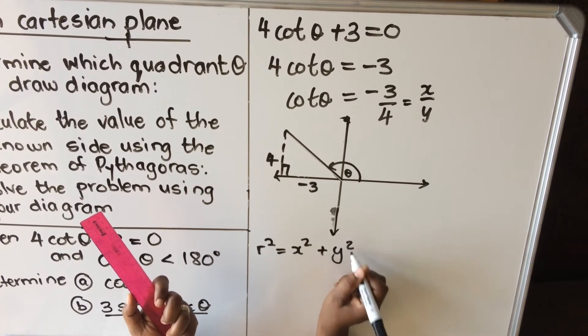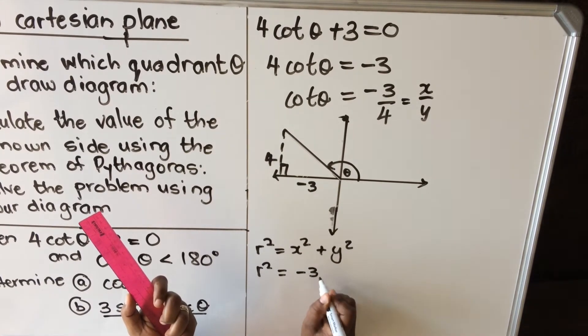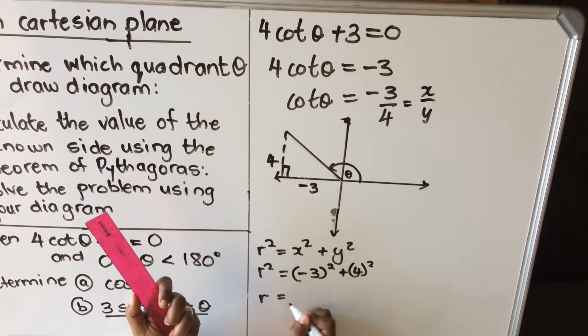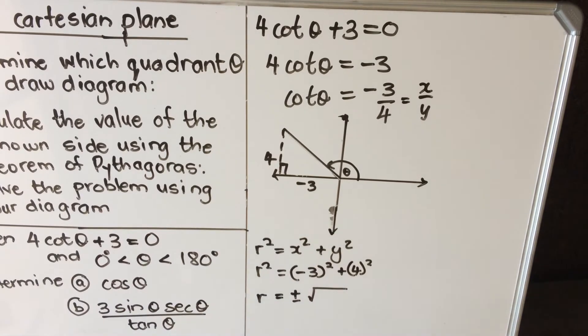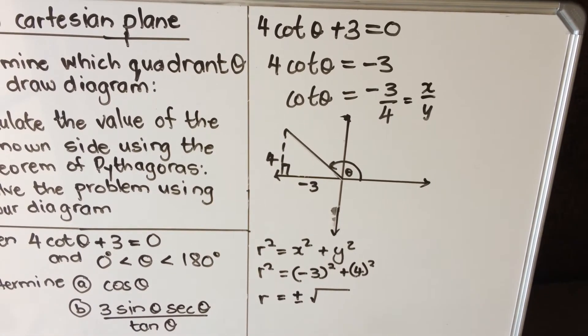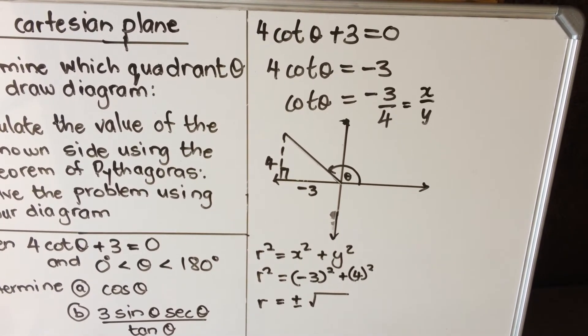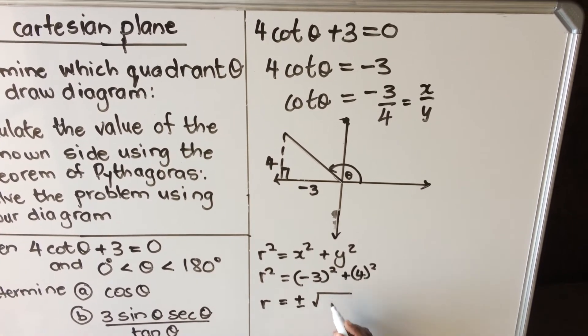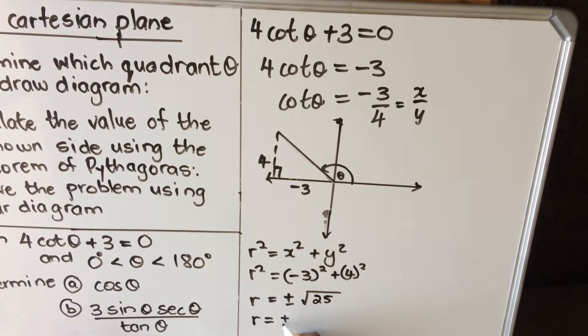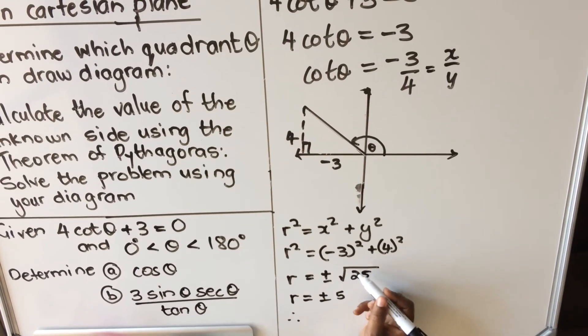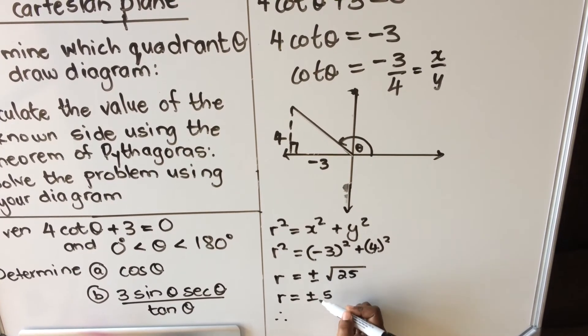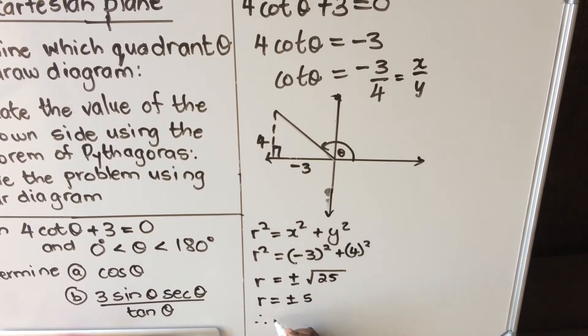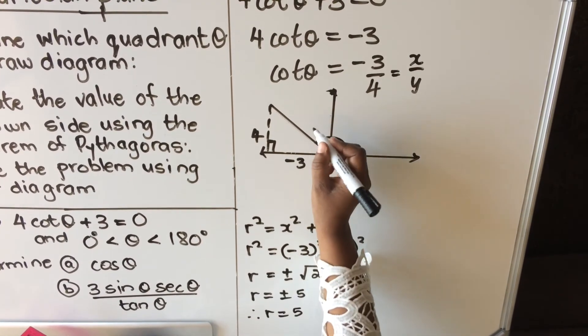This is my theta. My x is minus 3 and my y is 4, so I'm gonna use Pythagoras to calculate my r. So I have r squared equals x squared plus y squared. R squared equals minus 3 squared - very important put brackets around - plus 4 squared. And then my r equals plus minus square root, so it means my r is plus minus 5. R is always positive in all quadrants, so my r equals 5.